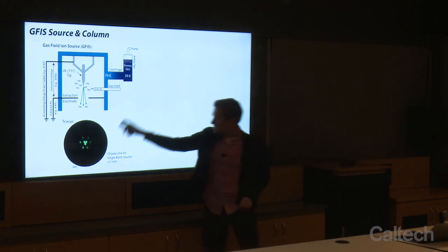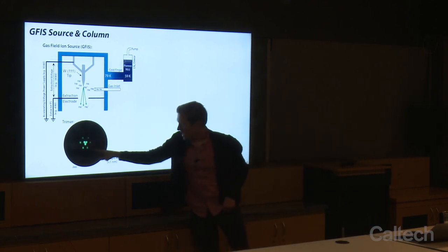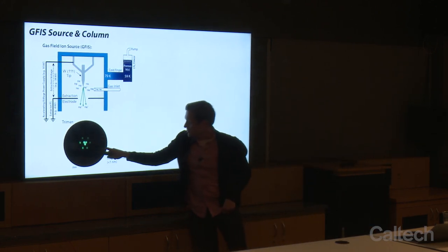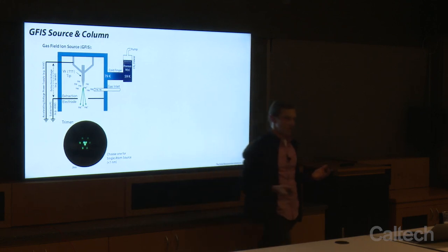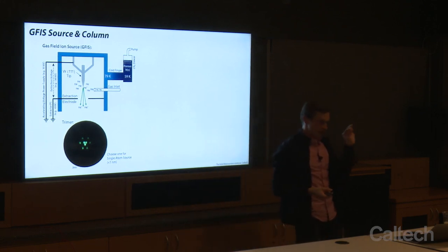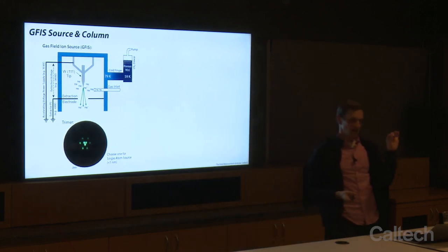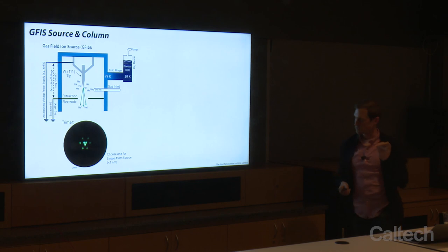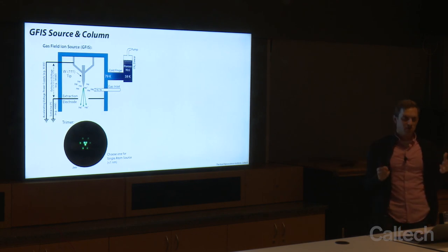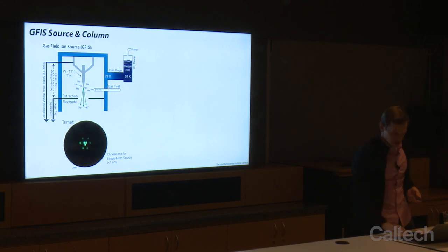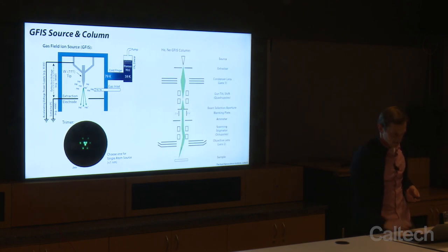At the very end of the tip, it's atomically sharp — we often call it a trimer. We have three atoms at the very end of the tip. That's how we concentrate the electric field there and get ionization of our gas.